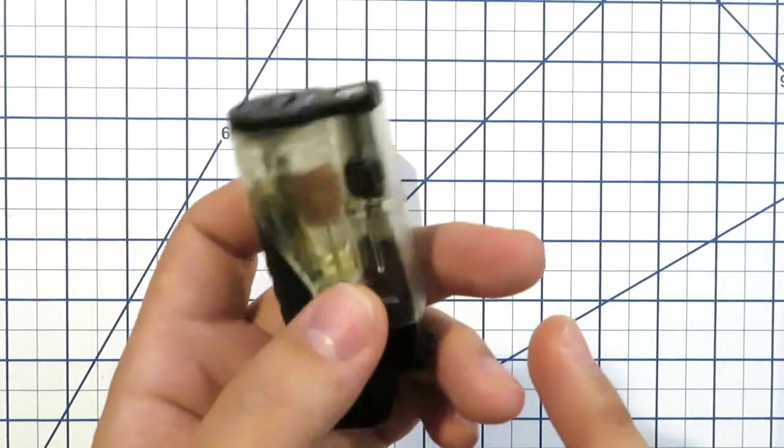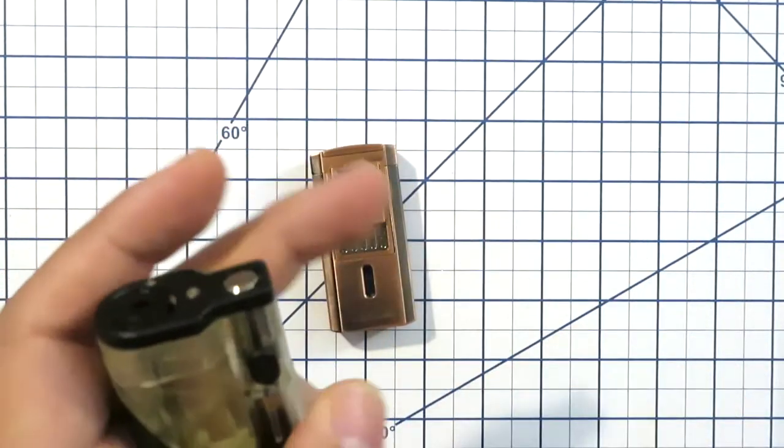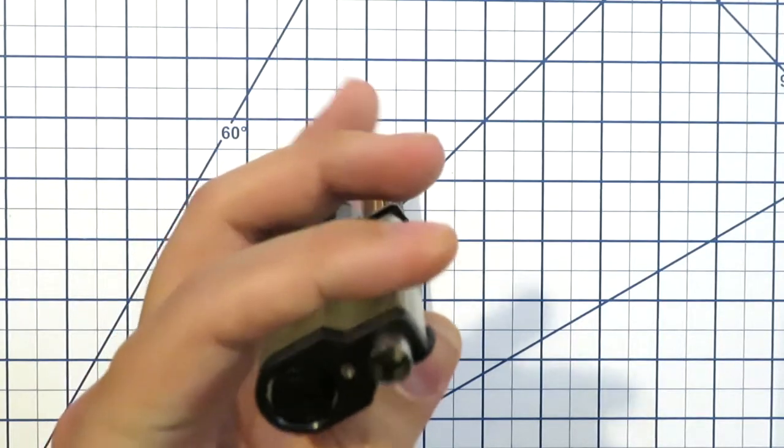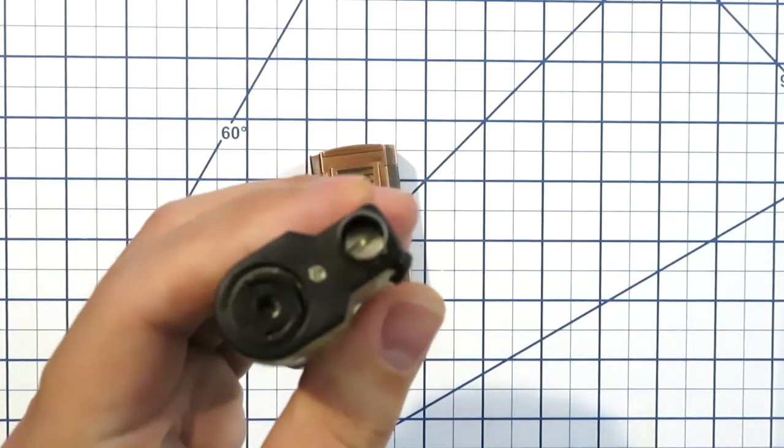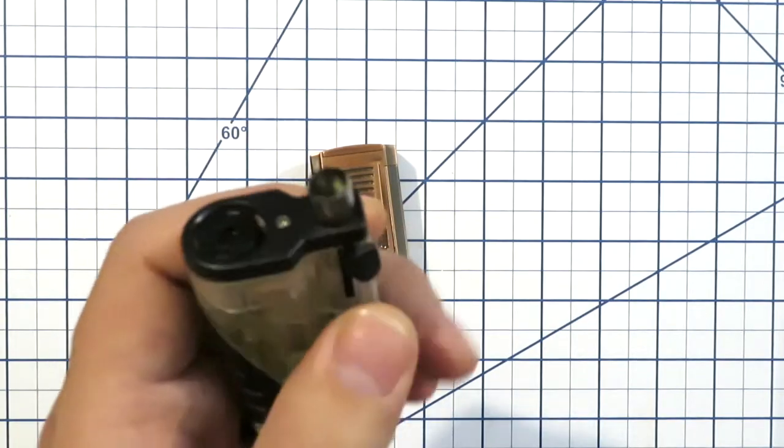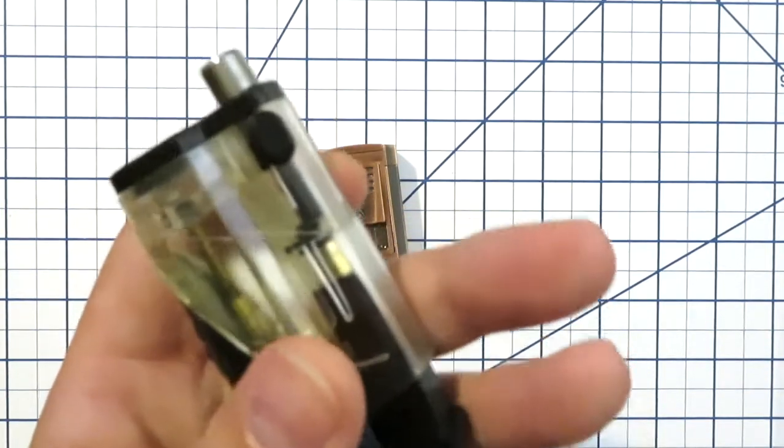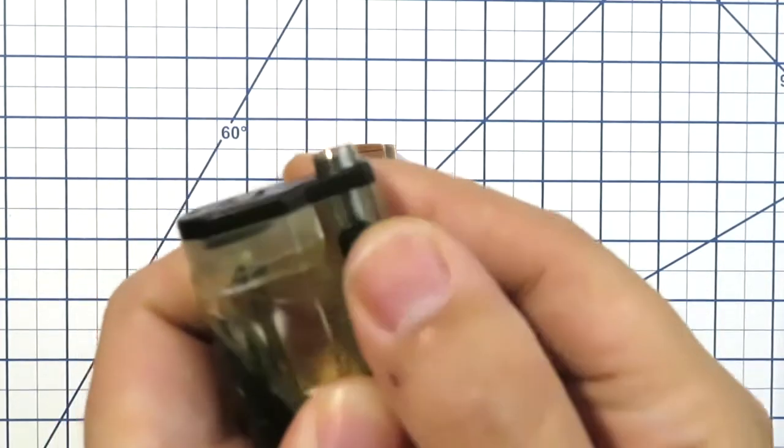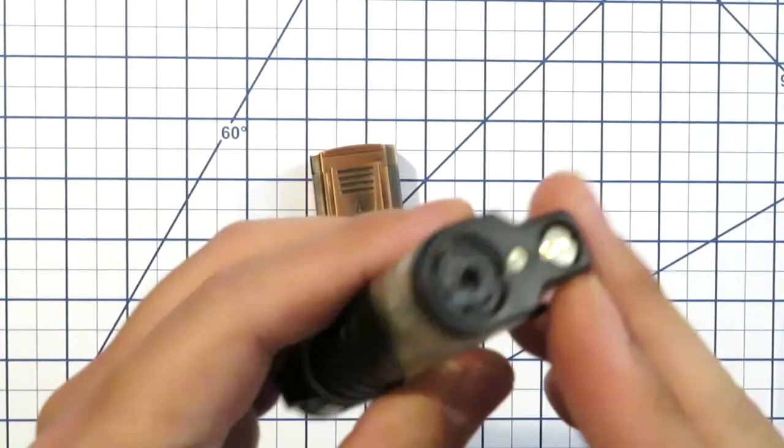But this lighter doesn't have an integrated cutter per se, but it does have a punch there. It's about a seven millimeter punch. Works pretty well. It's retractable here and lockable. So once you punch, retract it a couple of times and it kicks out that tobacco.